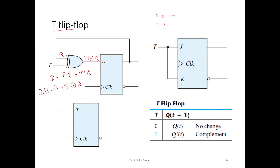So, when it is 0, 0 for a JK flip-flop, it is a no change state and when it is 1, 1, it is going to be complement of the previous state. So, that is what we are going to achieve here.